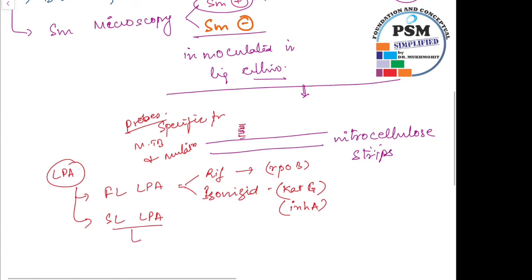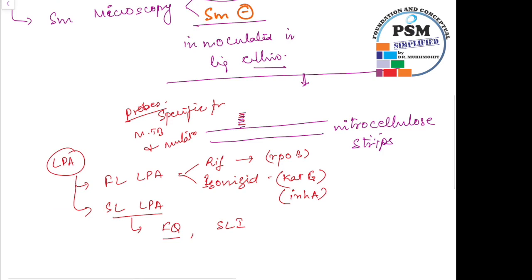The second line LPA is specific for any fluoroquinolone resistance and any second line injectable resistance. Fluoroquinolone resistance may happen due to some specific genes. These are known as GYRA and GYRB genes. So if these two genes are there, this could lead to fluoroquinolone class resistance or there could be second line injectable drug class resistance.